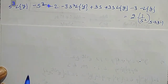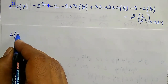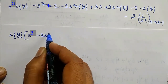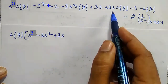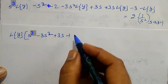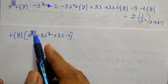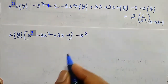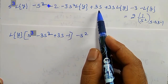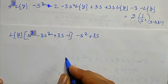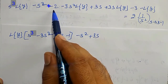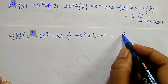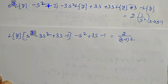Taking L{y} common, the coefficient bracket is s³ − 3s² + 3s − 1. The remaining constant terms are: minus s², plus 3s, and a constant of minus 1 (after combining all substituted values).